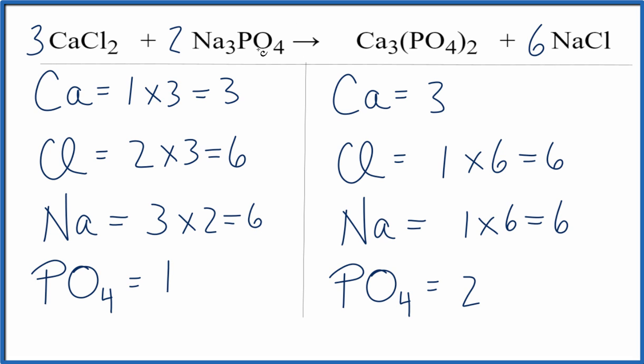And then our phosphate, this two applies to the whole thing here, so we have two of these phosphates, two times the one phosphate. That'll give us two phosphates, and we're done. This equation is balanced. So by counting this phosphate as just one item, that made the balancing a lot easier.